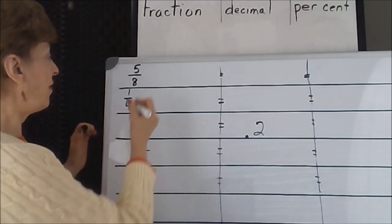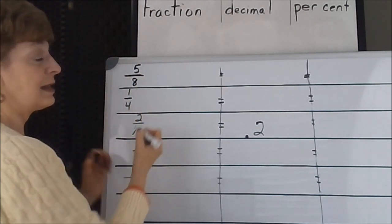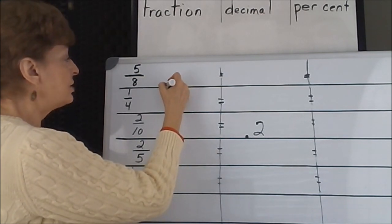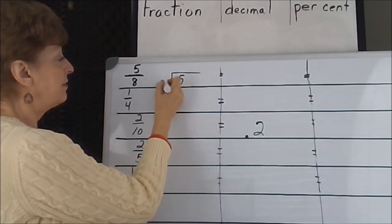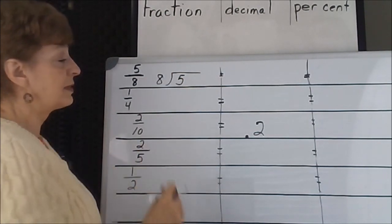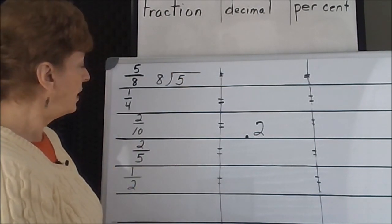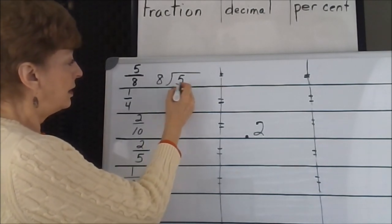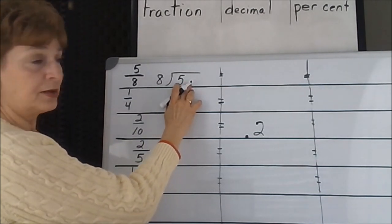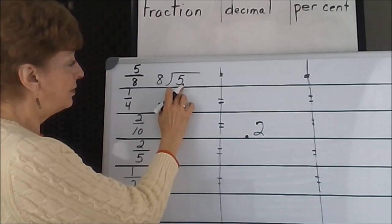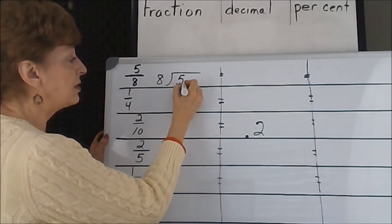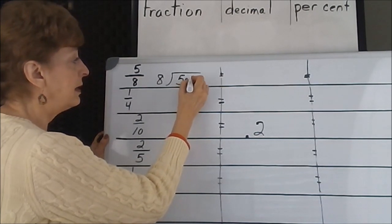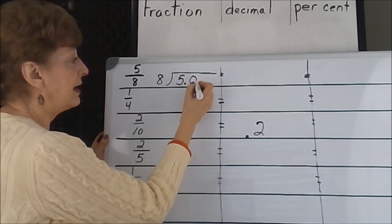Remember that the fraction line means divided by. So we could do a division problem with 5 divided by 8. That's what this is saying. But in this particular case, the 5 is too small for the 8 to divide into, so we're going to have to place the decimal point and start dividing.